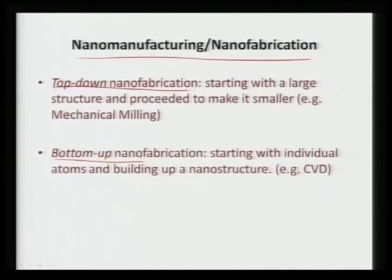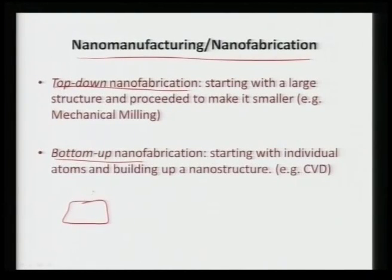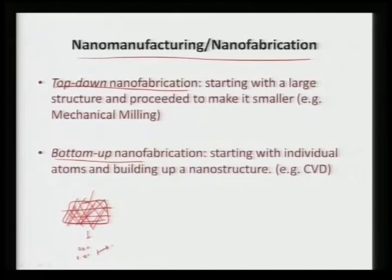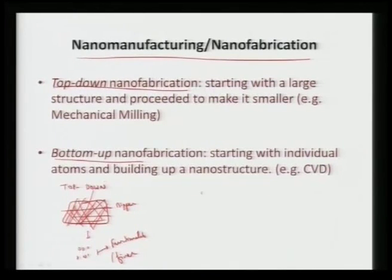The second one is the bottom-up nano fabrication. In this case, we start with individual atoms or molecules, which are much smaller than nano — in the angstrom regime. We start building up those individual atoms or molecules into a bigger shape. So in top-down we start with a bigger component and fracture or break it down until we get nano crystallinity or nano material out of it. In bottom-up we have very fine individual atoms and then put them into certain structure or shape to give a functionality to it.